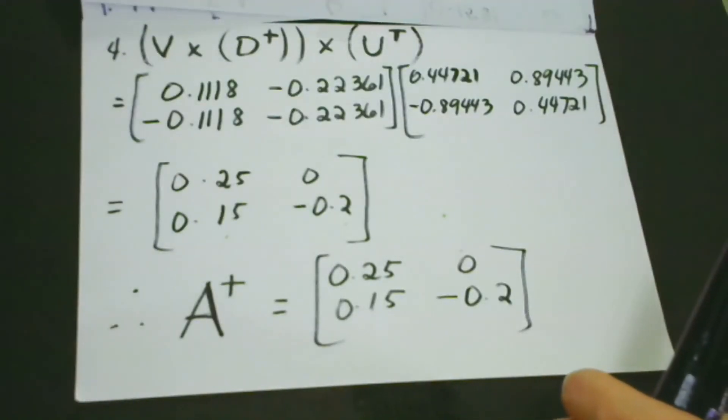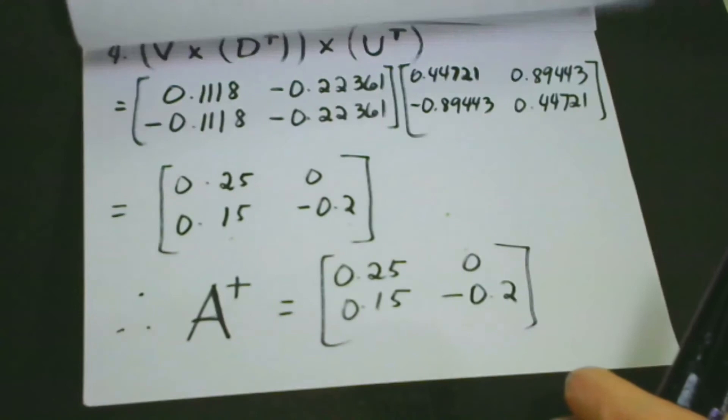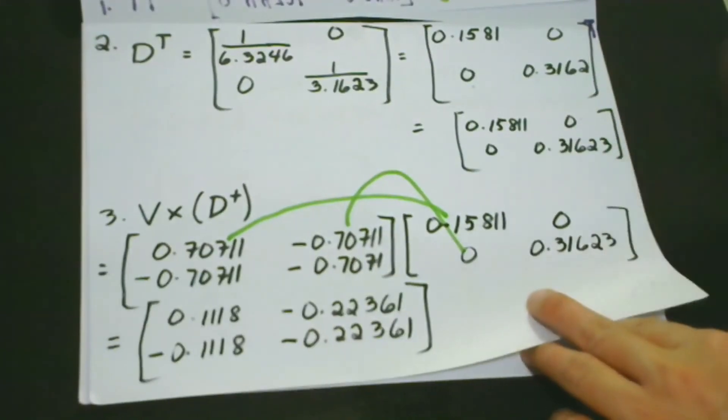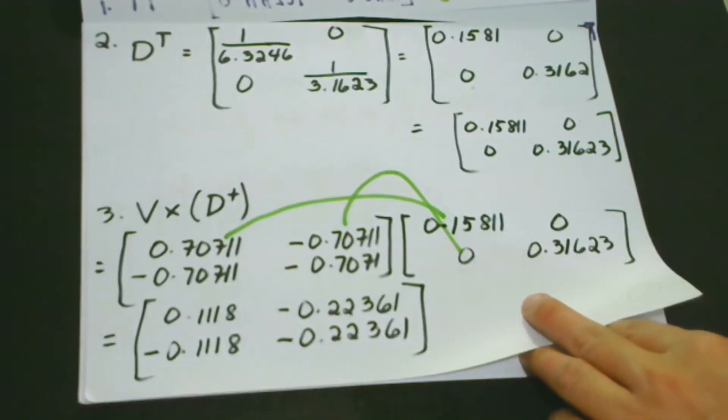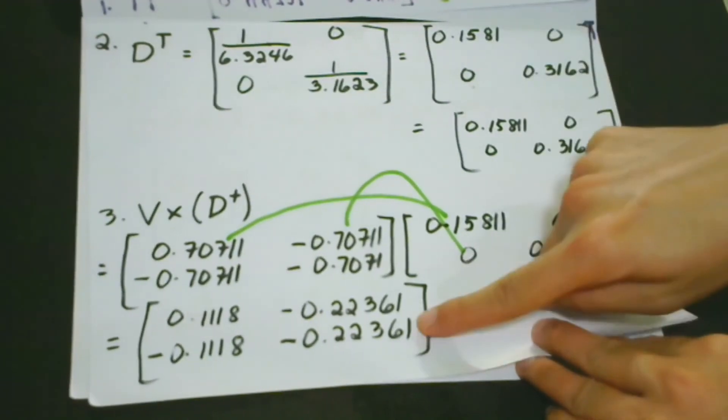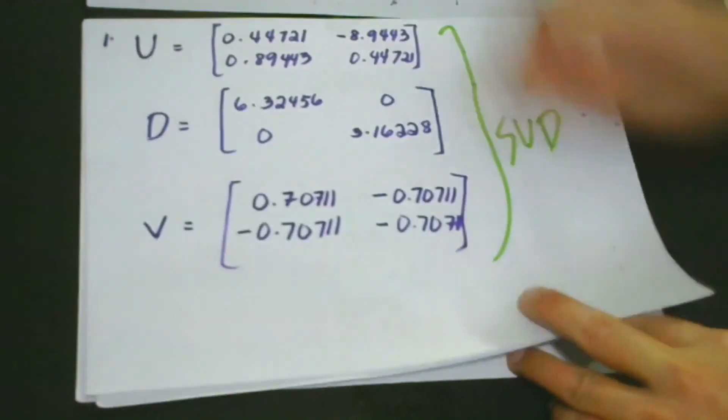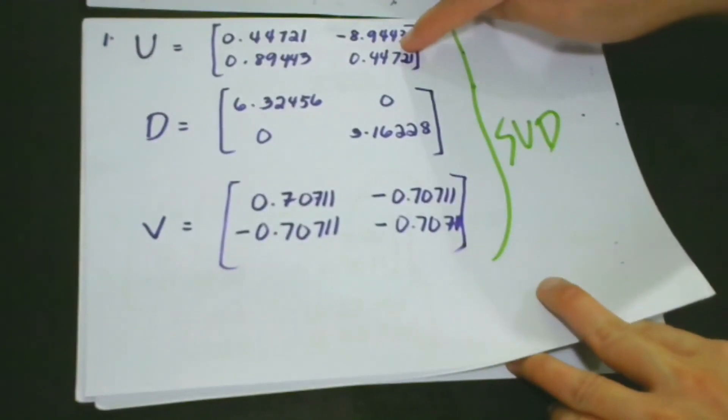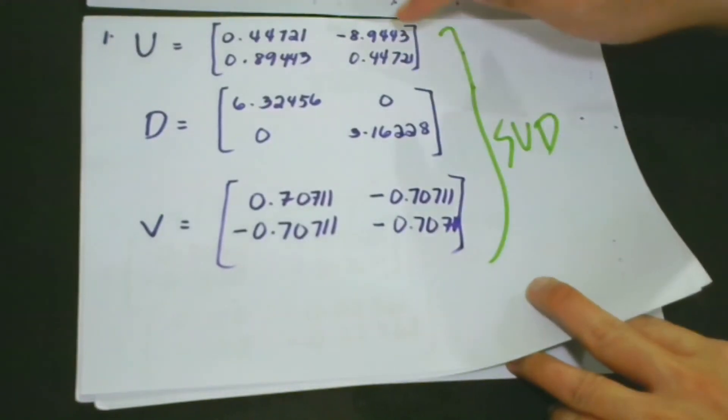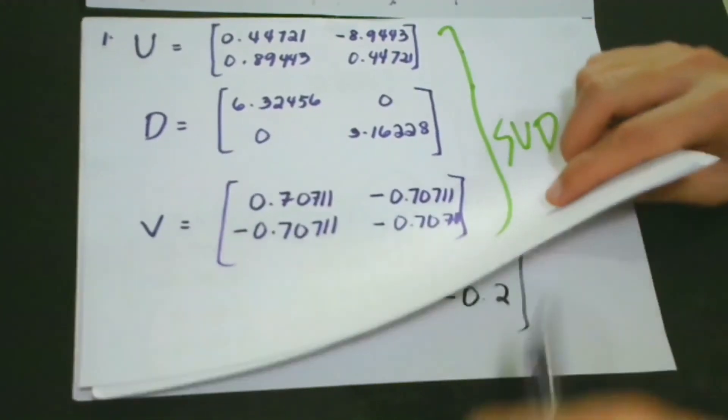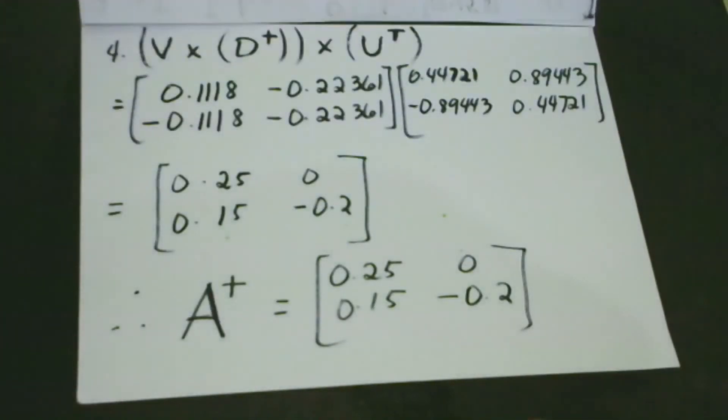I think we are ready for our fourth step. So the fourth step is that we're going to multiply the result in the number 3 to the transpose of U. Now, this is the result. And then we will multiply that to the transpose of U. So what is the transpose of U? We will see that later how we did the transpose.